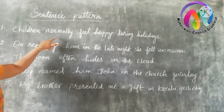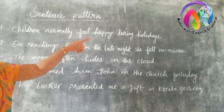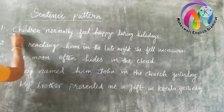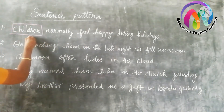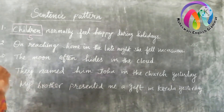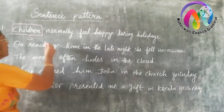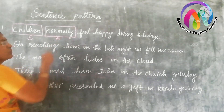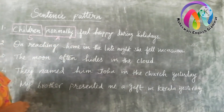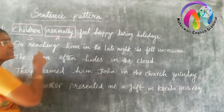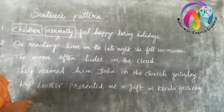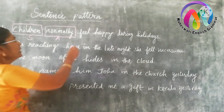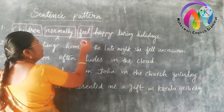In the sentence 'Children normally feel happy during holidays,' the word 'children' is a subject — who is doing the action is called a subject. 'Normally' is called an adverbial (achan). The adverbial asks the question when, where, or how. Here it asks the question 'how,' so 'normally' is the adverbial. 'Feel' is a verb.